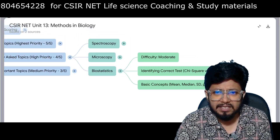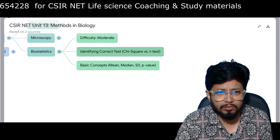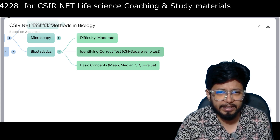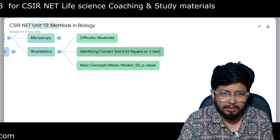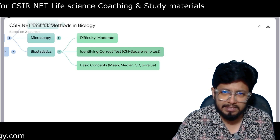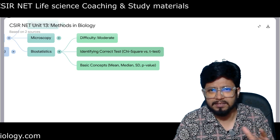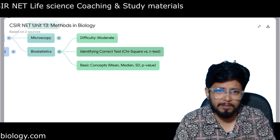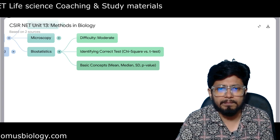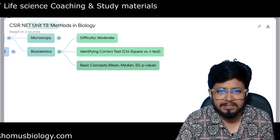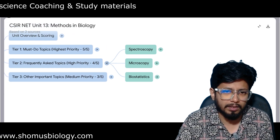In biostatistics at moderate difficulty, you need to identify the correct statistical test for a given data pattern. Chi-square test and T-test are required. ANOVA is sometimes asked. Basic concepts like median, mean, standard deviation, and p-value are equally important.